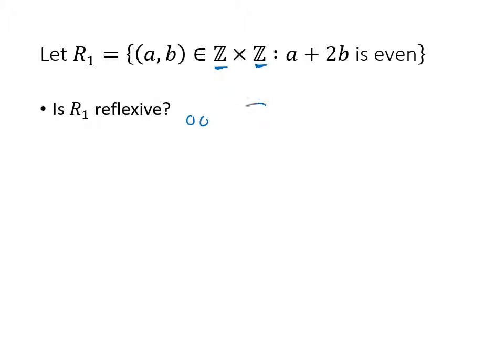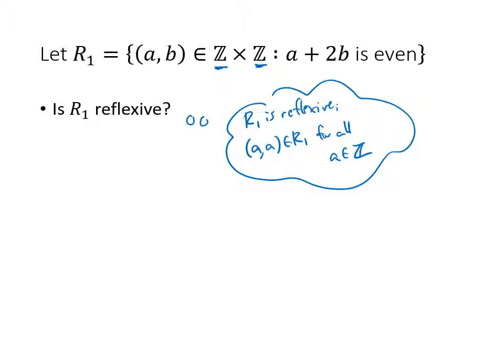We have to think about what it means for a relation to be reflexive. R1 is reflexive means that (a, a) is in my relation R1 for all a in my set, which in this case is the set of integers. To understand that, we might just try some numbers. Think of your favorite integer, maybe it's 5. Is (5, 5) in my relation R1? This helps you get a sense of whether or not you think this might be true.